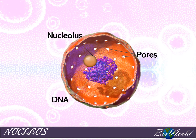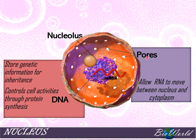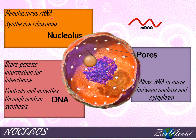The DNA inside the nucleus stores the genetic information for inheritance. That genetic code is transcribed into an mRNA, and the mRNA can leave the nucleus via the nuclear pore. Meanwhile, the nucleolus can manufacture ribosomal RNA, which also exits the nucleus via the nuclear pore. The ribosomal RNA will combine with proteins to form ribosomes, and the ribosome will then translate the genetic code of the mRNA to synthesize proteins. In this way, the nucleus controls the cell's activities.